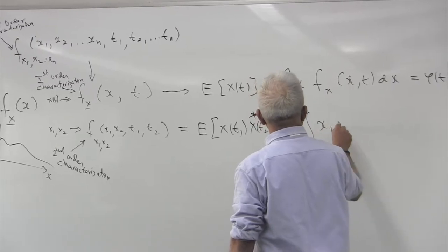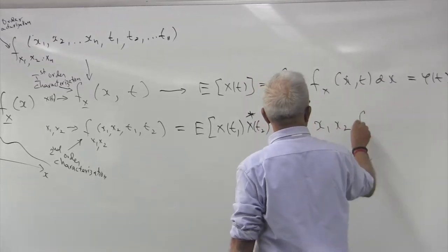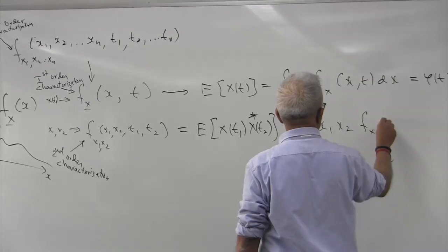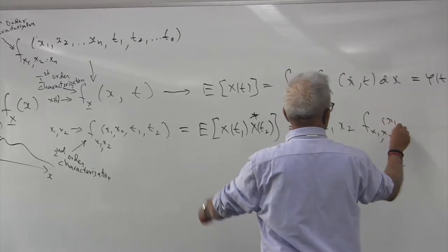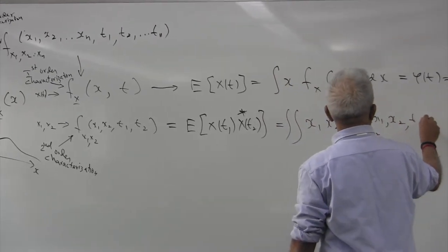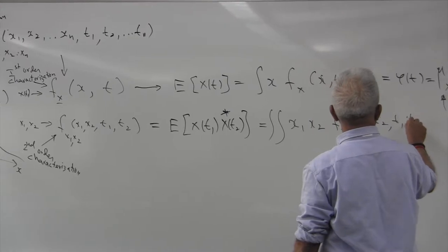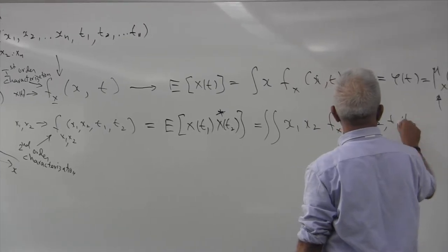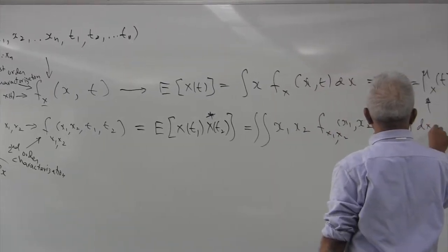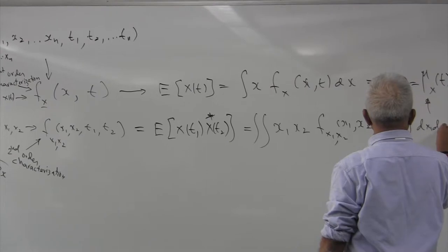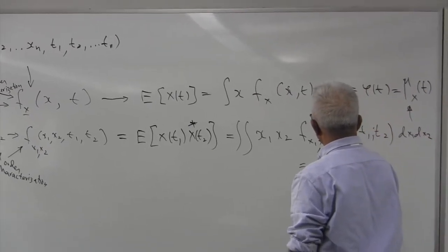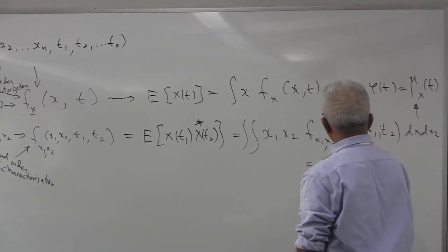This is the same as the double integral of x1 times x2 times the joint density function f(x1, x2, t1, t2) dx1 dx2. When x1, x2 are integrated out, you get this to be a function of t1 and t2.